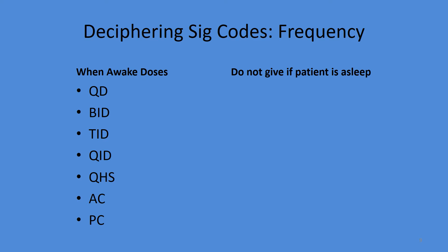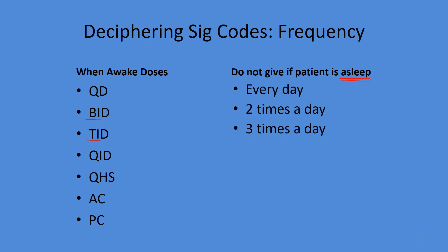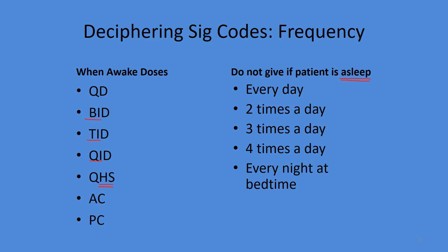For when-awake dosing, you do not give the medication if the patient is asleep. BID: two wheels on a bicycle, two times a day. TID: three wheels on a tricycle, three times a day. QID: four wheels on a quad, four times a day. QHS stands for 'hour of sleep' — we translate it as every night at bedtime, to make sure they don't take it during a nap. AC is before meals, PC is after meals, and AC with a line on top means with meals.